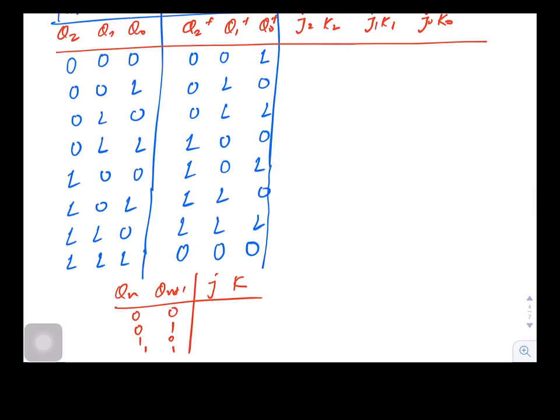If it is a JK flip-flop, 0 0 is 0 cross, 1 1 is cross 0, 0 1 is 1 cross, and 1 0 is cross 1. This table actually is derived from the characteristic table.